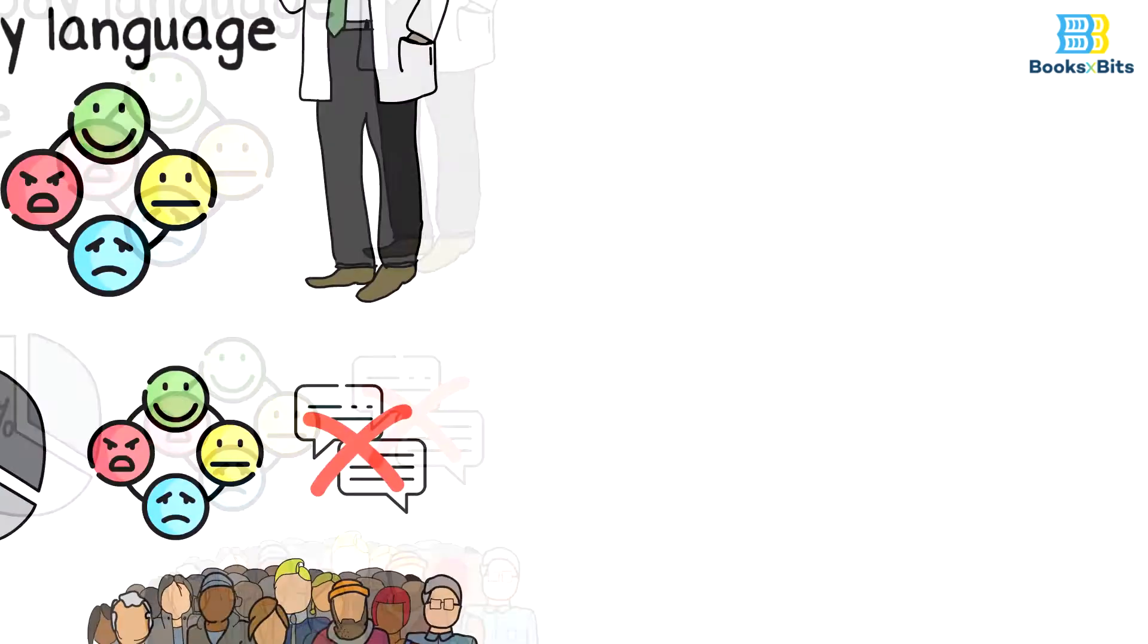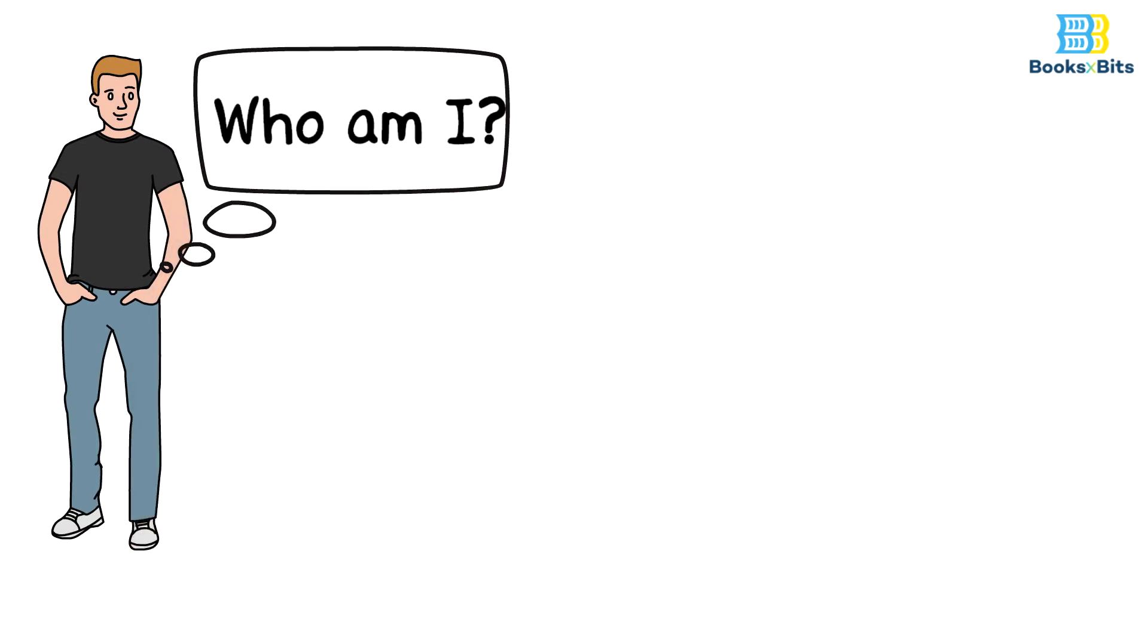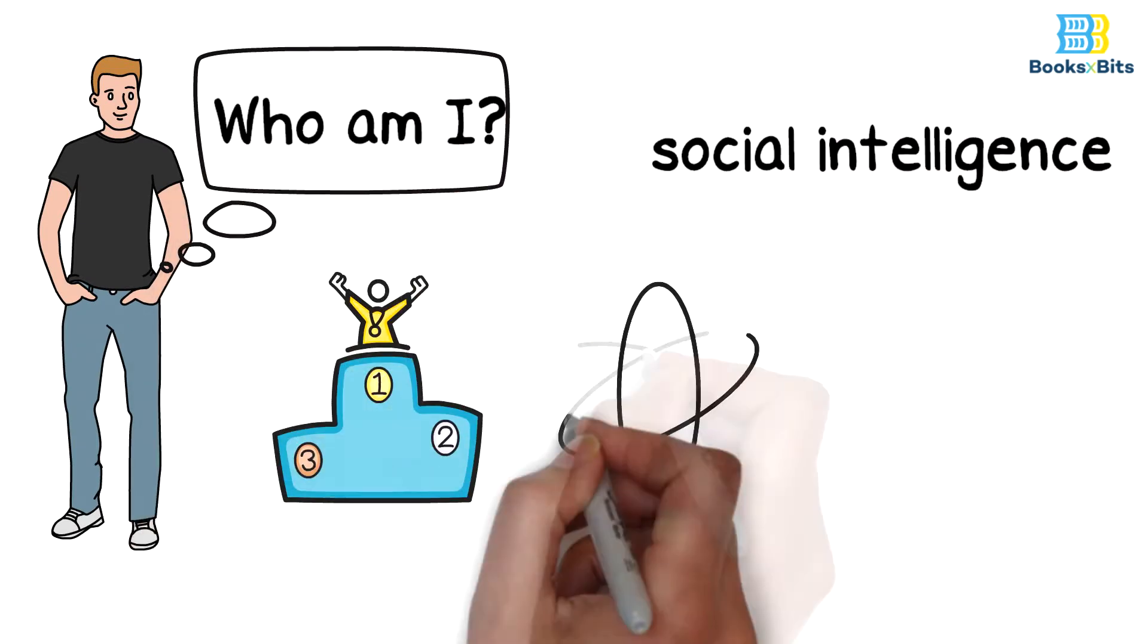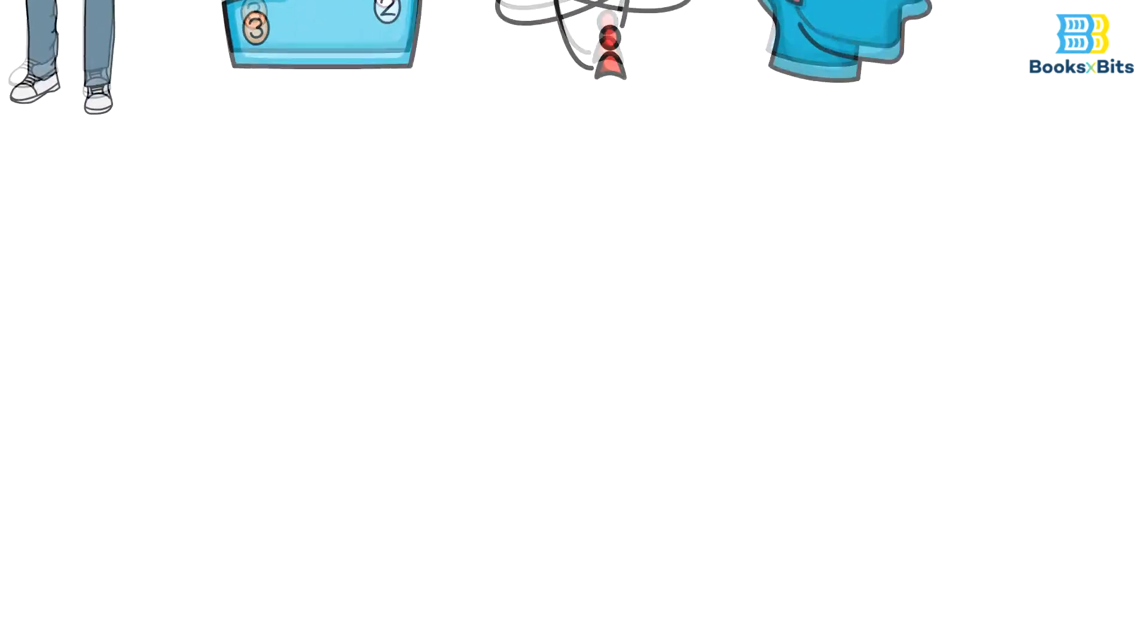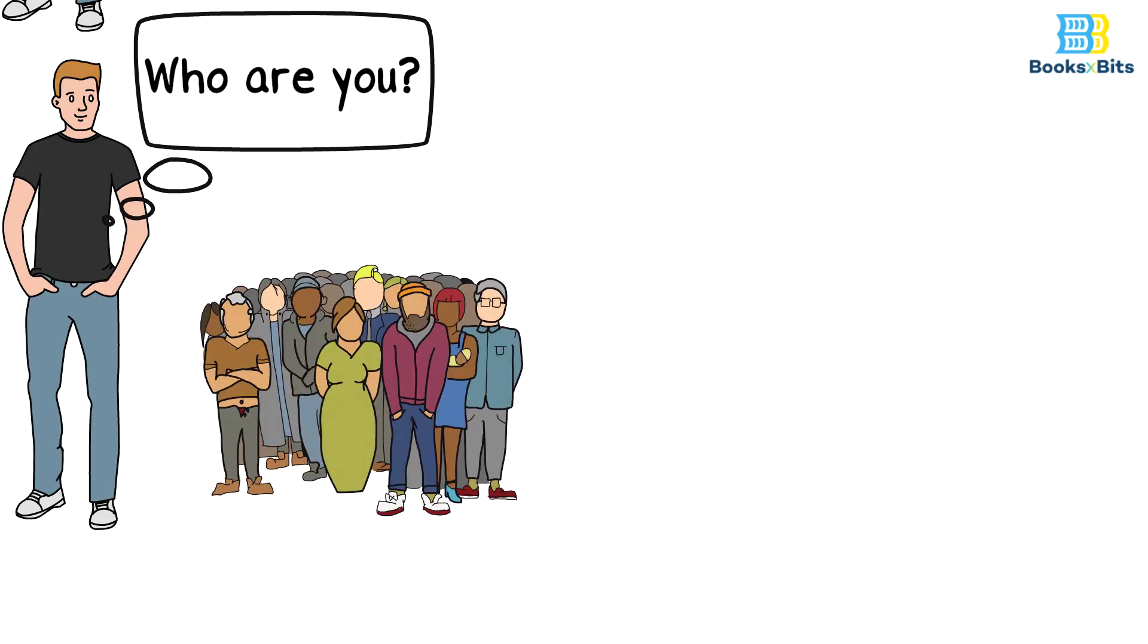After knowing all of the above, you should ask the following questions. Who am I? The secret of social intelligence and your superiority in communicating with others lies in knowing yourself first. Who are you? The secret of social intelligence also lies in knowing who you communicate with.